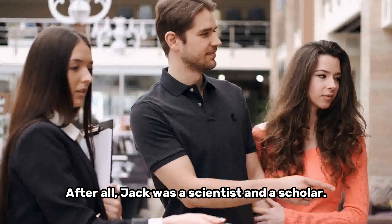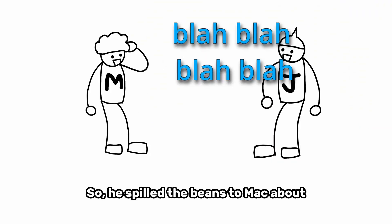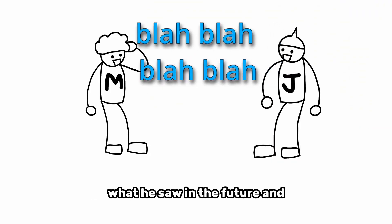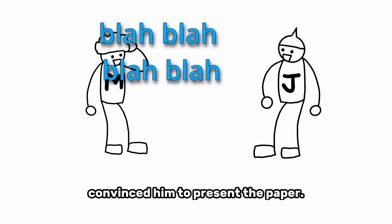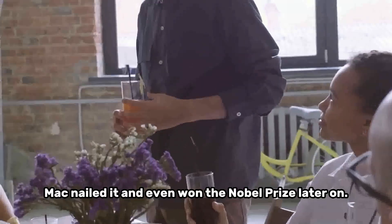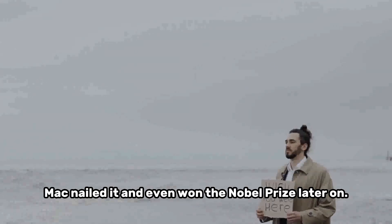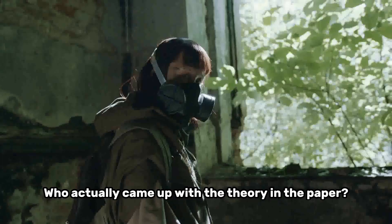After all, he was a scientist and a scholar. So, he spilled the beans to Mac about what he saw in the future and convinced him to present the paper. And guess what? Mac nailed it and even won the Nobel Prize later on. But here comes the paradox. Who actually came up with the theory in the paper?